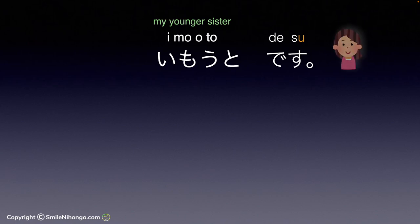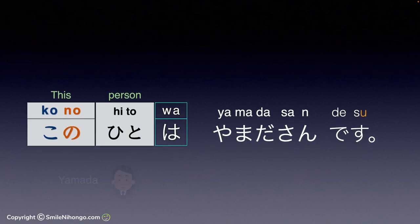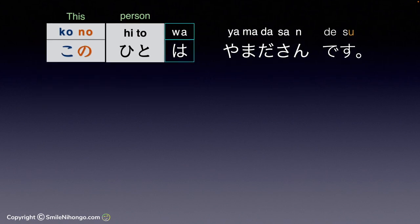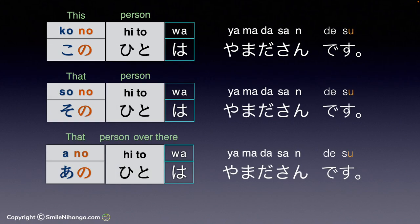This version sounds a lot better than using これ and is most natural in Japanese. With her standing right next to me, it's clear I'm talking about her, so 妹です is good enough in context and automatically means 'this is my younger sister.' Like this, the の series is essential when you talk about people because using これ or それ for people sounds really bad in the culture.